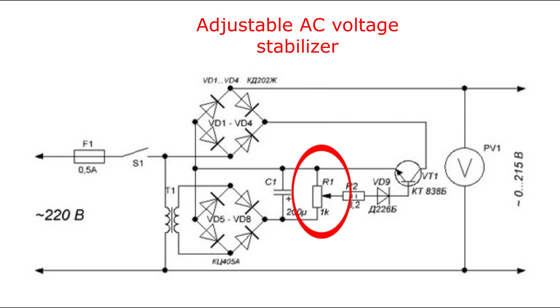The base current of the transistor is regulated by a variable resistor R1. A constant voltage is supplied to the resistor R1 from a step-down transformer through a rectifier on diodes from D5 to D8 and is smoothed by a capacitor C1.